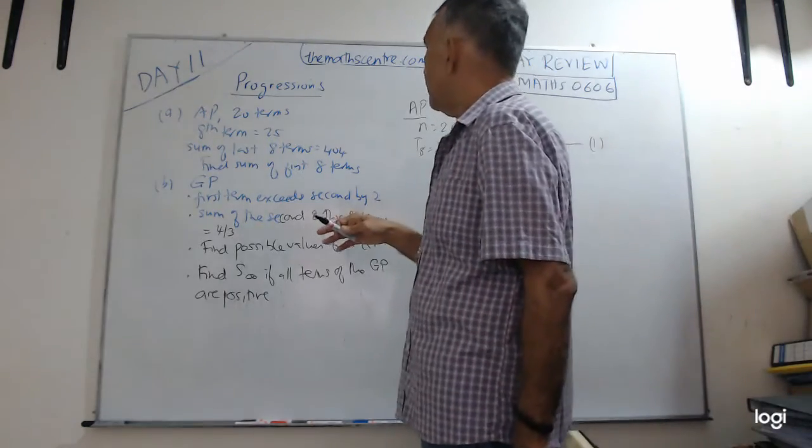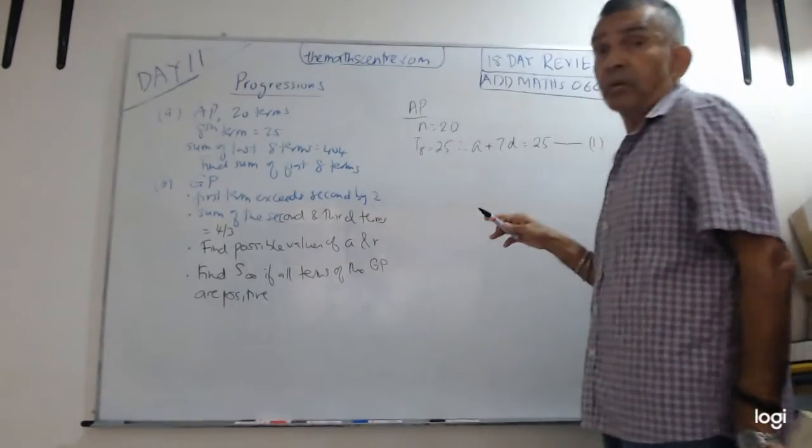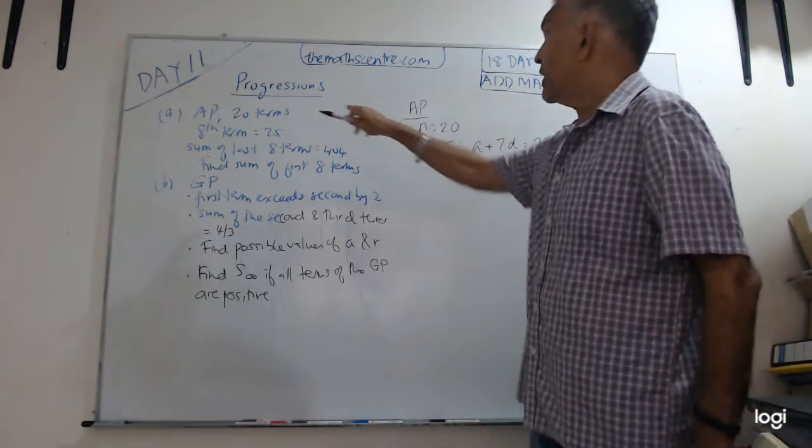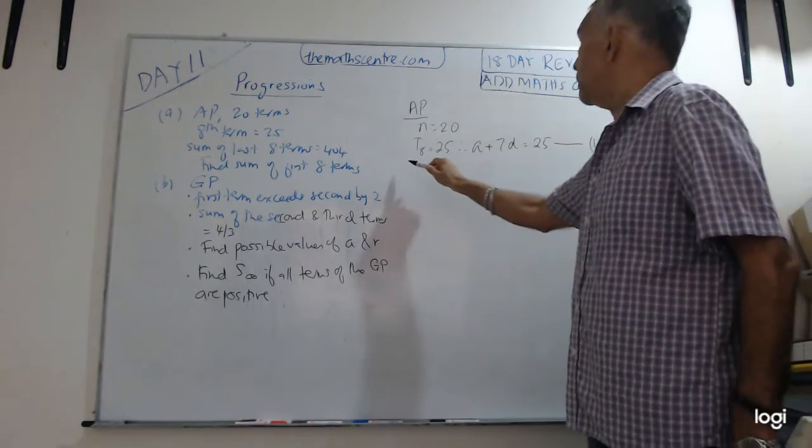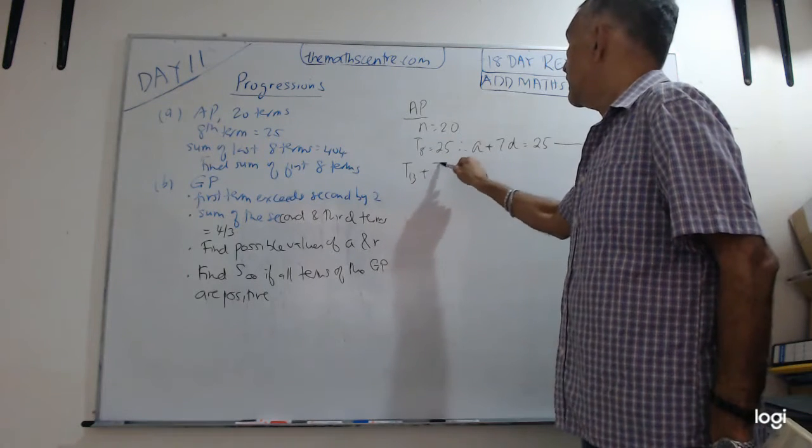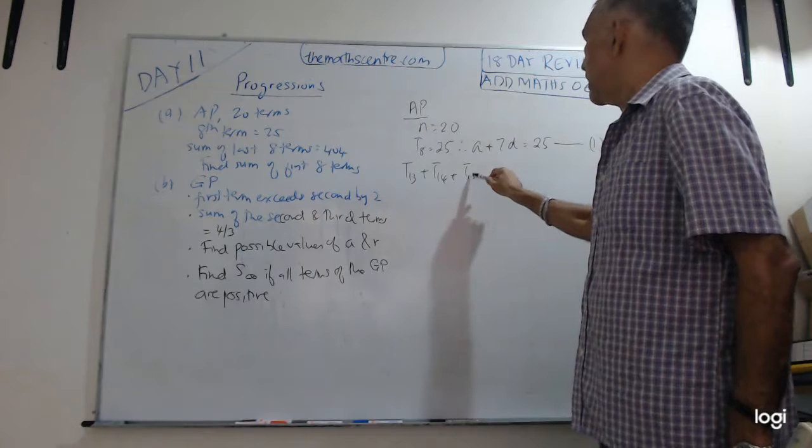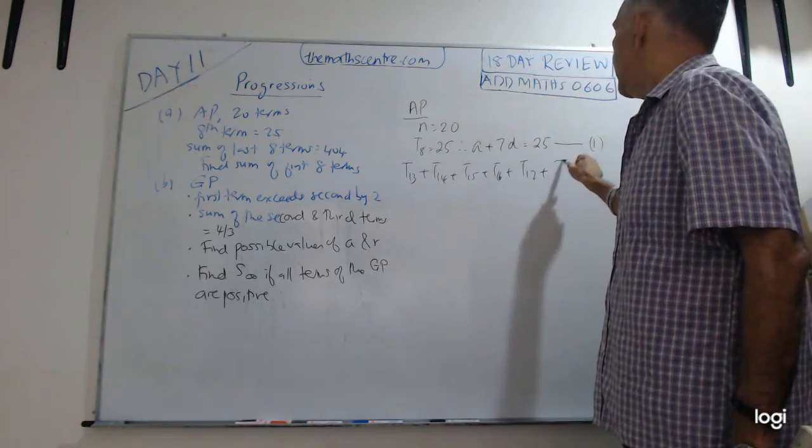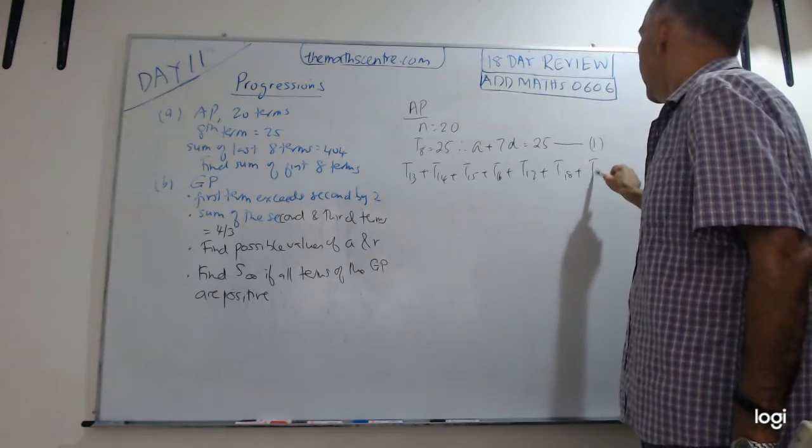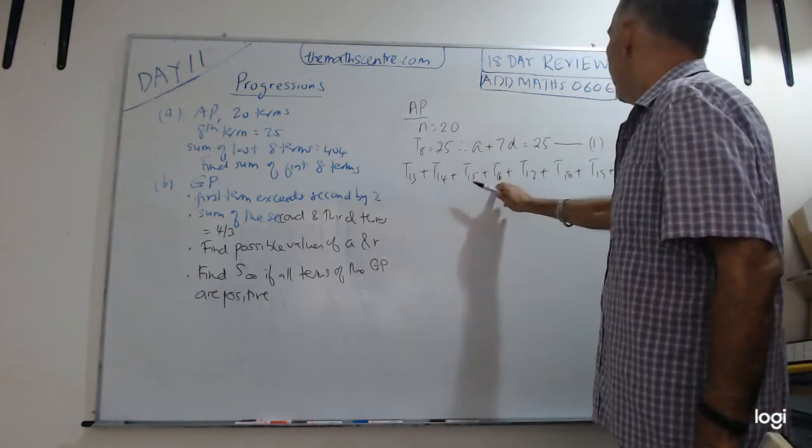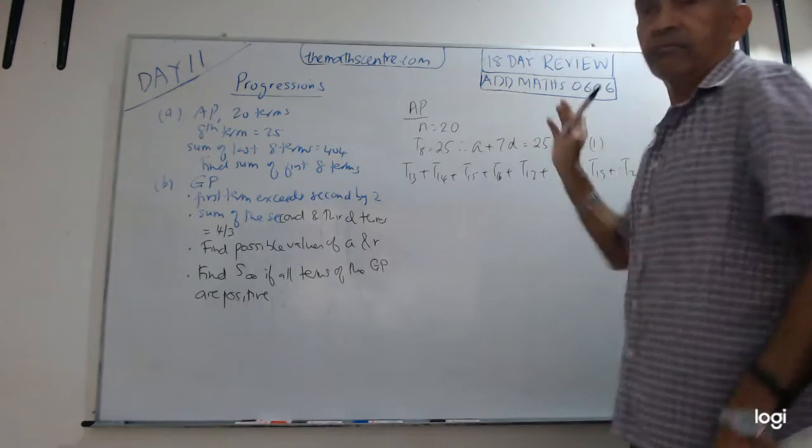And then they tell me the sum of the last eight terms. Be careful about this. The sum of the last eight terms. We have got 20 terms. The last eight will be T13 plus T14 plus T17 plus T18 plus T19 plus T20. Have I counted? 1, 2, 3, 4, 5, 6, 7, 8. There are 8.